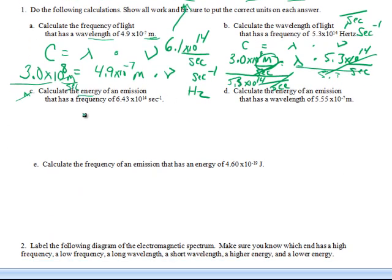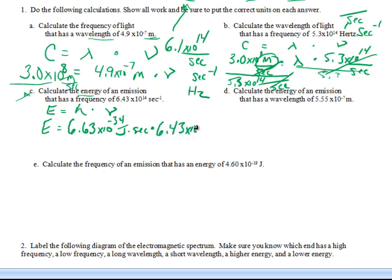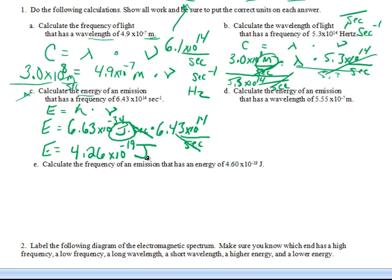Now it says energy, so we're going to use a different equation: energy equals Planck's constant times frequency. We're solving for E. We know Planck's constant always - it's always given to you: 6.63×10⁻³⁴ joules·second. The frequency is 6.43×10¹⁴ per second. Multiply the two together and energy is going to equal 4.26×10⁻¹⁹. Look at the units - seconds on top, seconds on the bottom cancel, and you're left with joules. That makes sense because the unit for energy is joules: 4.26×10⁻¹⁹ joules.